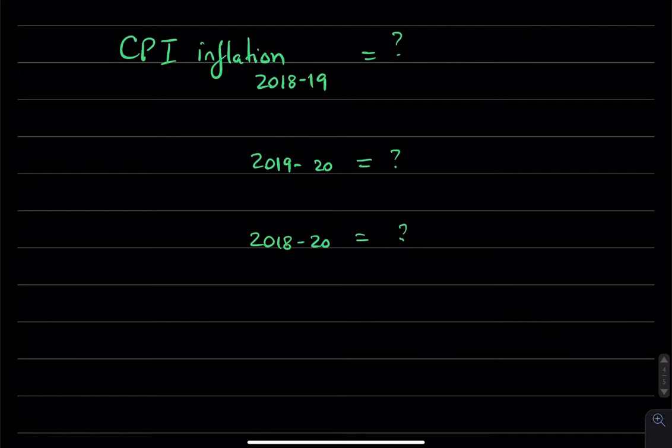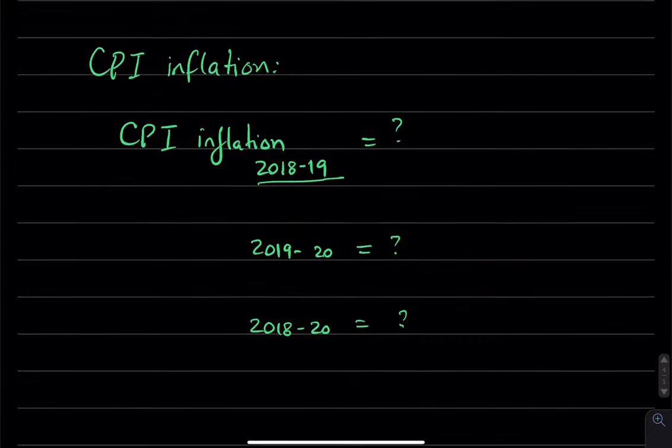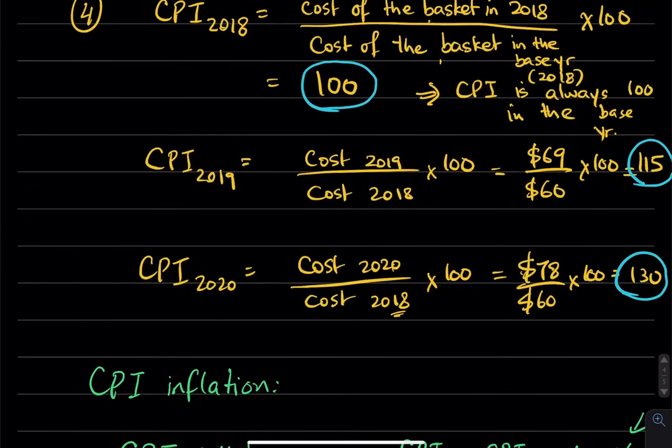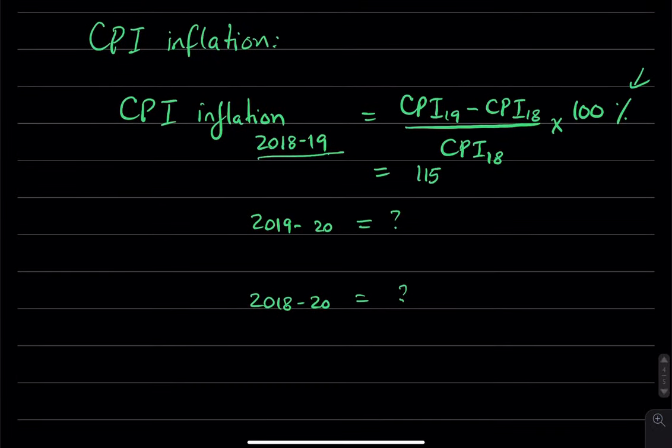So, let's think about CPI inflation in 2018, between 2018 and 2019. How are we going to do this? We are going to take CPI in the new year, which is 19. CPI in 2019 minus CPI in 2018, which is the old year, divided by the CPI in 2018, times 100 percent. We don't want to forget this percent. And that equals 115 minus 100, divided by 100, times 100 percent. You could have already seen this, because the base is 100. This is a 15 percent jump in the level of prices. So, we can say that inflation, the inflation rate between 2018 and 19 is 15 percent.